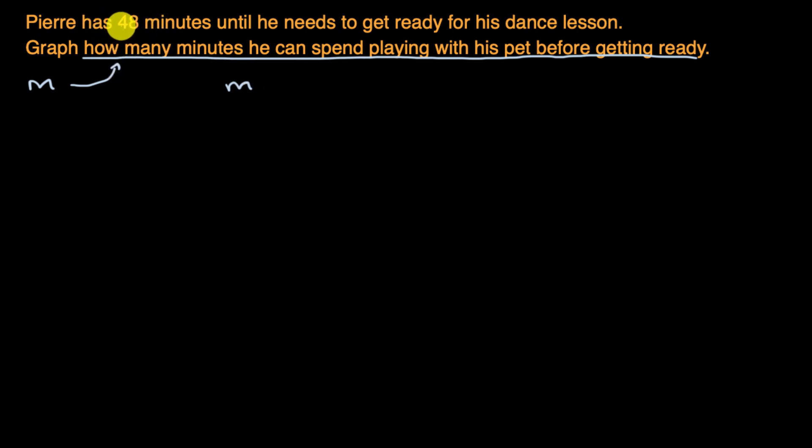Well, he has 48 minutes, so he could spend anywhere from zero up to and including 48 minutes. So you might say M is less than 48, but it's not just less than, it could even be exactly 48 minutes, as long as immediately after that he gets ready for his dance lesson. So M is less than or equal to 48.